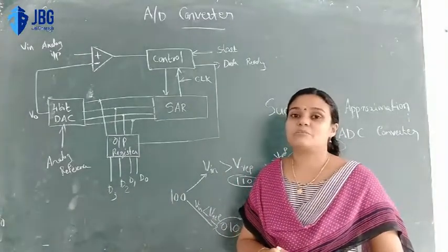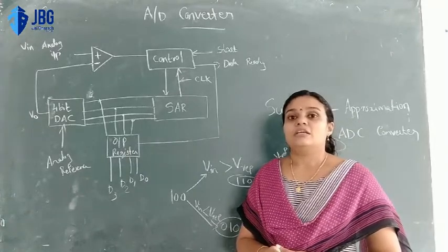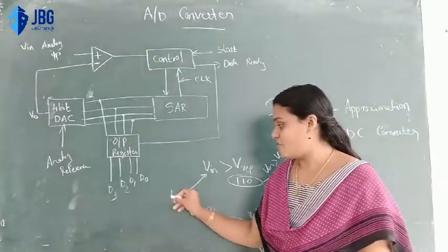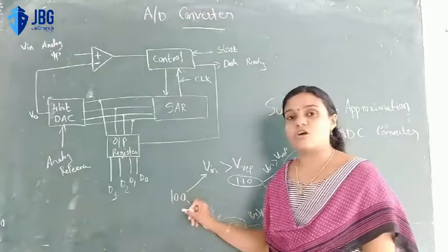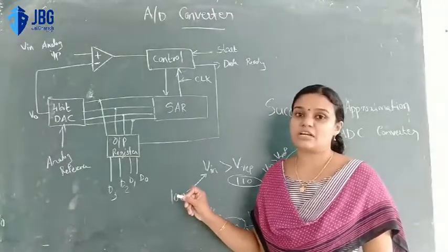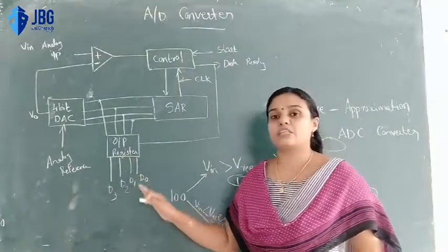The MSB in the successive approximation register is 0, 0, 0. Here we have 3-bit conversion, and here we have 4 lines in the same way.